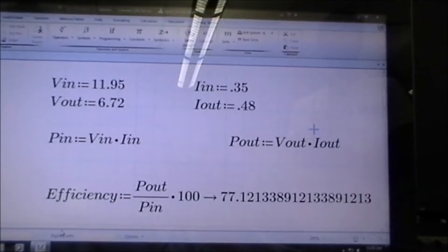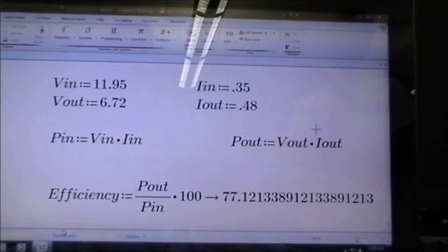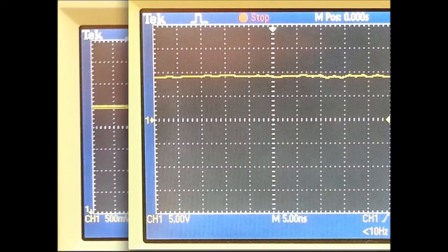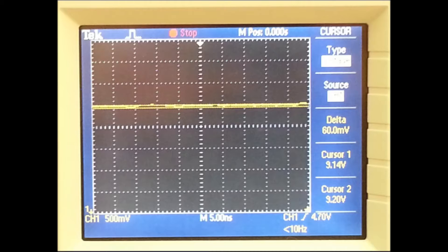We use the oscilloscope to confirm our results. Here we can see that we have 9.17 volts, and we also measured the voltage ripple, which is a delta of 60 millivolts, giving us less than 2 percent ripple. We meet our specification.